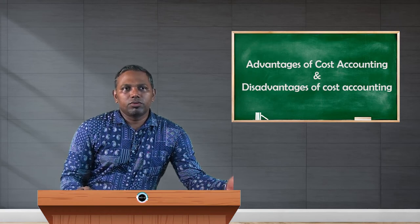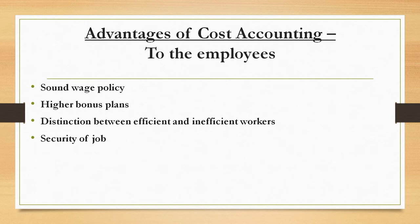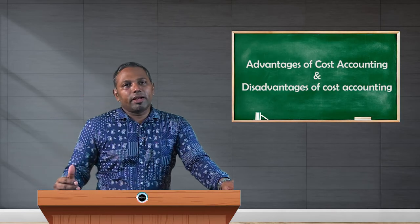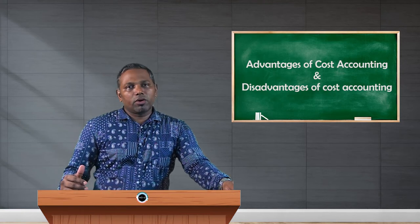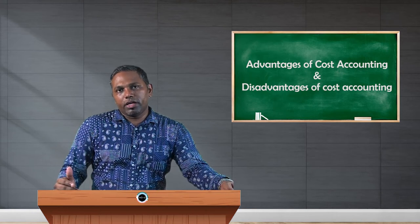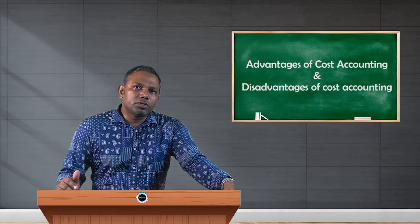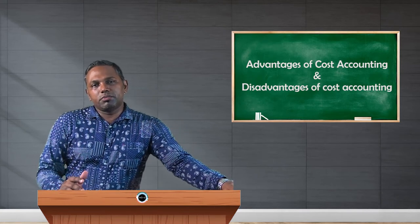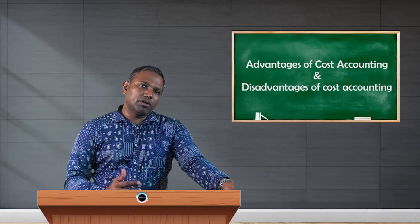Now let's discuss what benefits employees get when you have a cost accounting system in the organization. When you adopt a cost accounting system in the company, employees automatically benefit through sound wage policies and higher bonus plans. Employees are differentiated into two categories — efficient and inefficient — and efficient employees will get good wages along with incentives. Inefficient employees get the opportunity to join the efficient group and improve their performance.